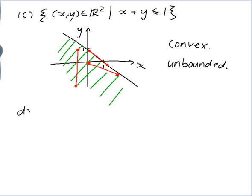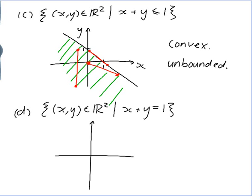D. The set of (x, y) in R2 such that x plus y is equal to 1. I've already drawn that in the previous picture — it was this line where x plus y equals 1. That set is still unbounded; it goes on forever in both directions. And it's still convex. If I pick two points on this line and join them, the line segment is contained in the line. So it's still convex.